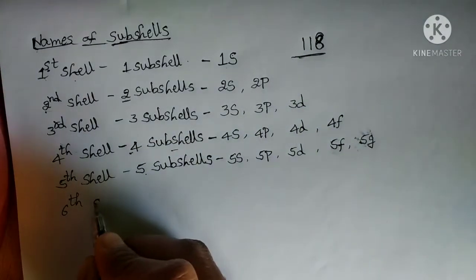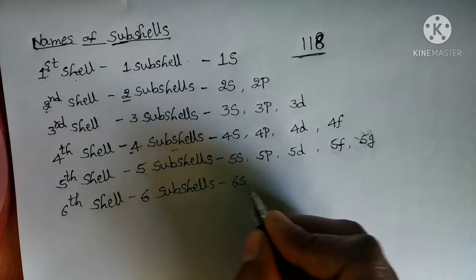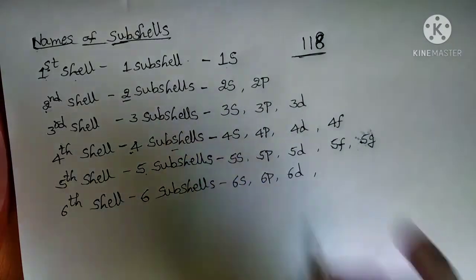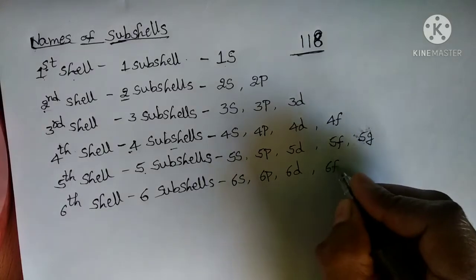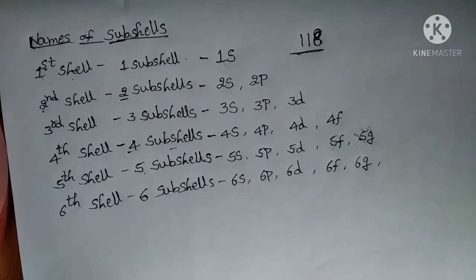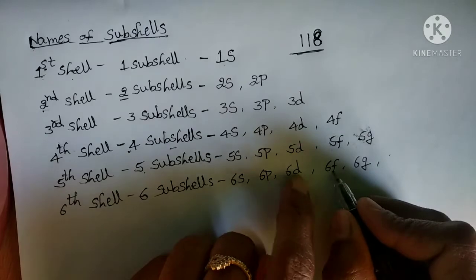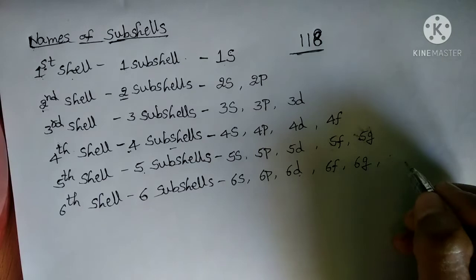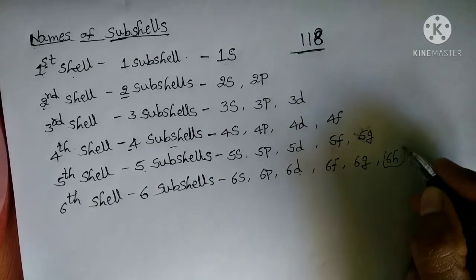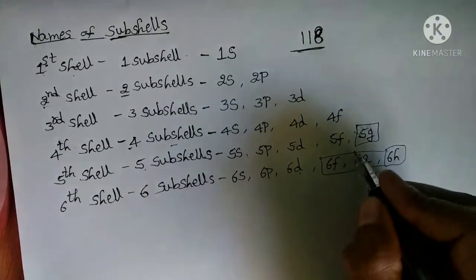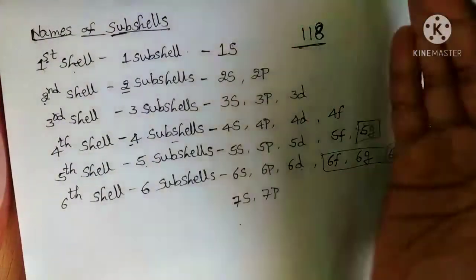In the sixth shell, six subshells are present. The names are 6s, 6p, 6d, 6f. For 6g and beyond, there is no electron present so a name has not been established — some members suggest 6h, but there are no electrons there. Similarly in the seventh shell it is 7s and 7p; even in 7d there is no electron.